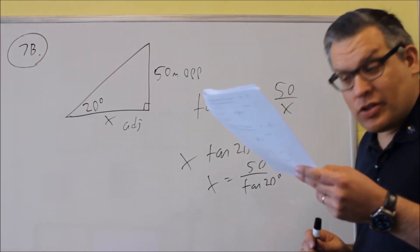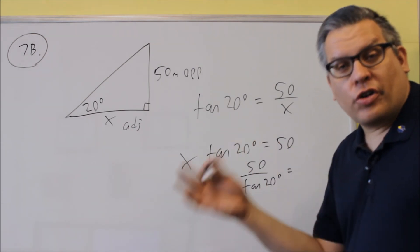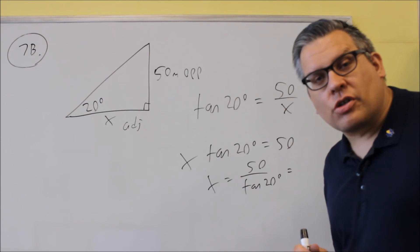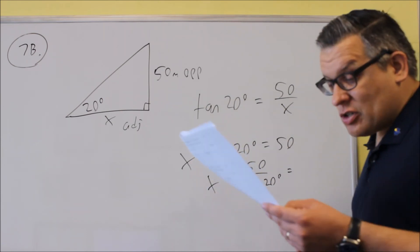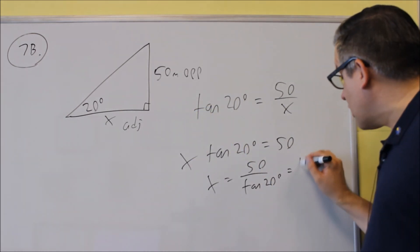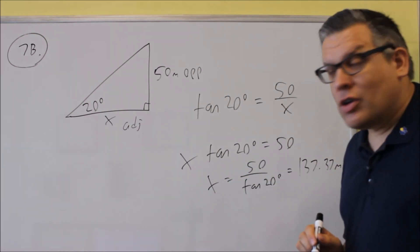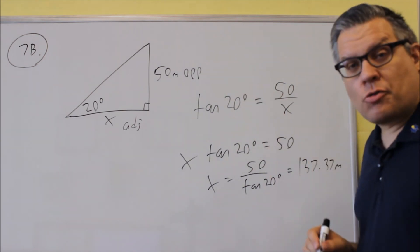It says round to two decimal places this time, so it will either tell you round to the nearest whole number or round to a certain decimal point, so pay close attention to the instructions on that. So it says round to two decimal places. That means that's going to be 137.37, and that would be in terms of meters since the height is in terms of meters.